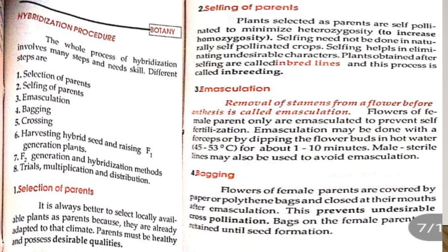Emasculation: removal of stamens from a flower before anthesis is called emasculation. The flowers of the male parent only are emasculated to prevent self-fertilization. Emasculation may be done with forceps, or by dipping the flower bud in hot water — up to 45 to 53 degrees centigrade — for about 1 to 10 minutes. Male sterile lines may also be used to avoid emasculation.